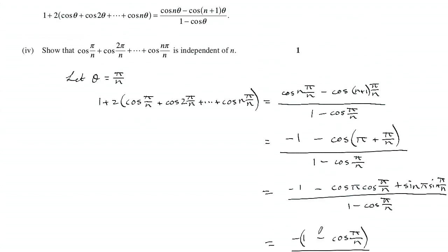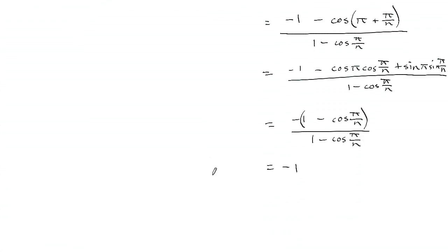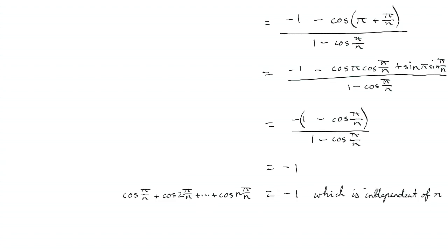We're trying to show that the result is independent of n — meaning it doesn't have an n in it, it's just a constant number that won't change when n changes. So subtract 1 from both sides and divide by 2: negative 1 minus 1 divided by 2 is negative 1. On the other side we have the sum expression. That shows it equals negative 1, which is independent of n. Part B.